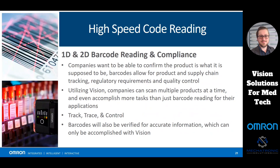The next example is high-speed code reading, which goes back to traceability — 1D and 2D barcode reading and compliance. Companies want to confirm that the product coming down the line is what it's supposed to be. Barcodes allow for product and supply chain tracking, regulatory requirements, and good quality control. Utilizing machine vision, we can scan multiple products at a time and accomplish more tasks than only barcode reading. With our F430 MicroHawk cameras, we can both read barcodes and complete vision jobs with a single product.